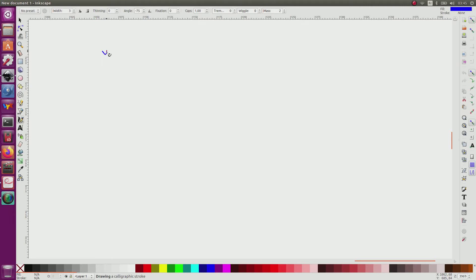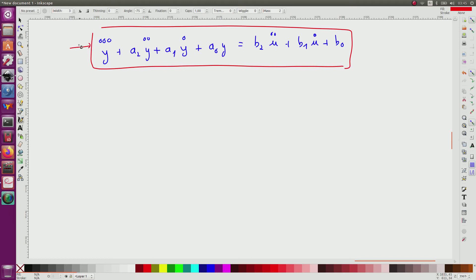So I have this differential equation: y dot dot dot plus a2 y dot dot plus a1 y dot plus a0 y equals b2 u dot dot plus b1 u dot plus b0. This system links the input u to the output y.